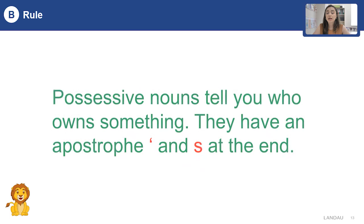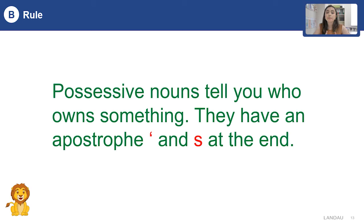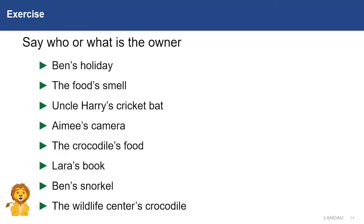Nouns that have apostrophe and S at the end are called possessive nouns. These nouns show us who owns something. Please say who or what is the owner.